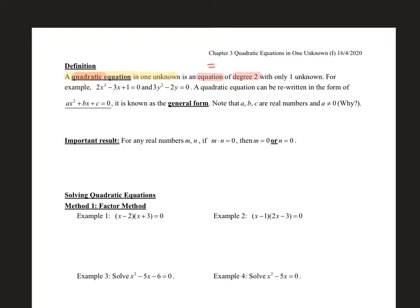And finally, it is only in one unknown. So we can't have x, y, z together. If it's x in the equation, it's merely talking about x. If it's y, it's merely about y only. For example, 2x² minus 3x plus 1 is a quadratic equation — it has an equal sign, the greatest power is x², and it's only in one unknown x. Similarly, 3y² minus 2y equals 0 is also a quadratic equation.